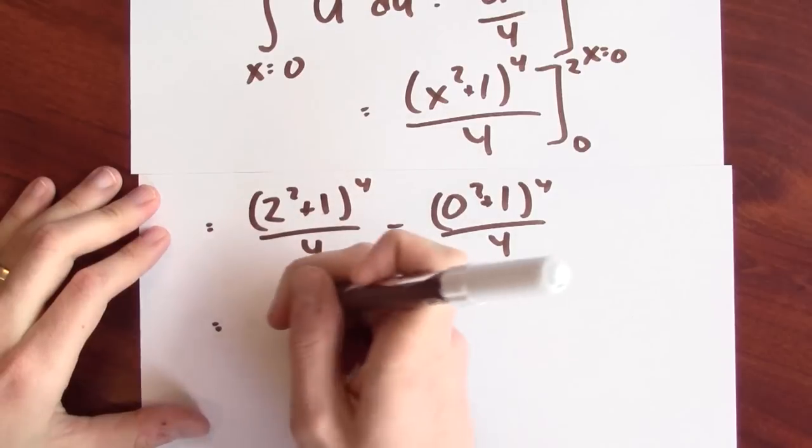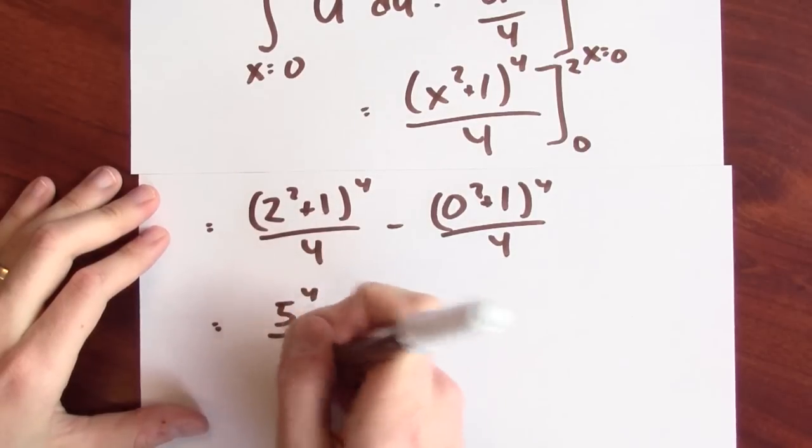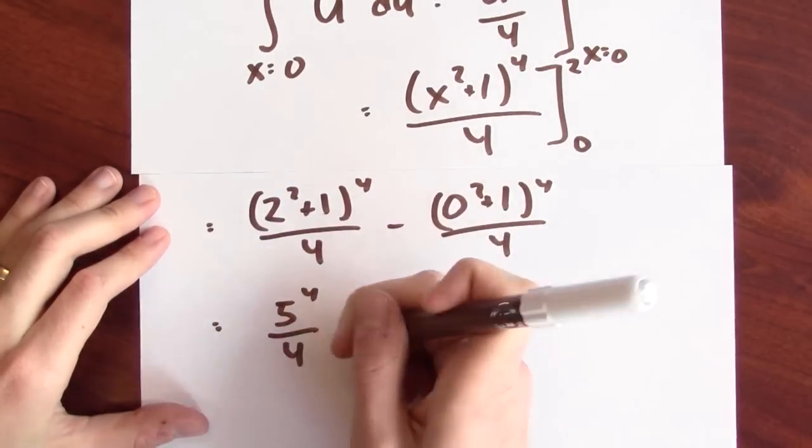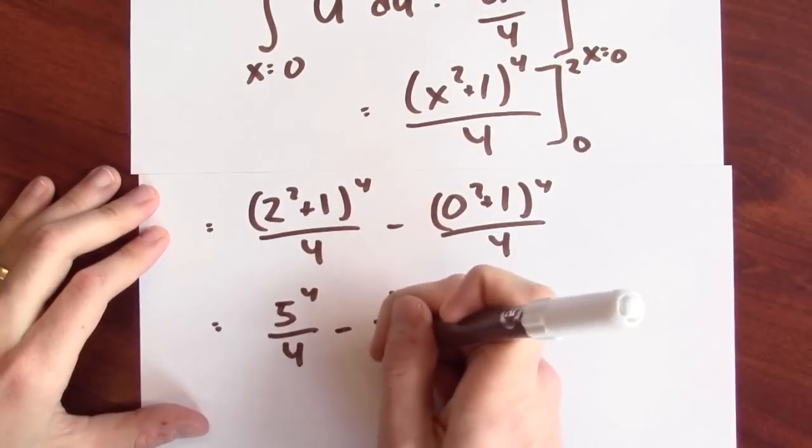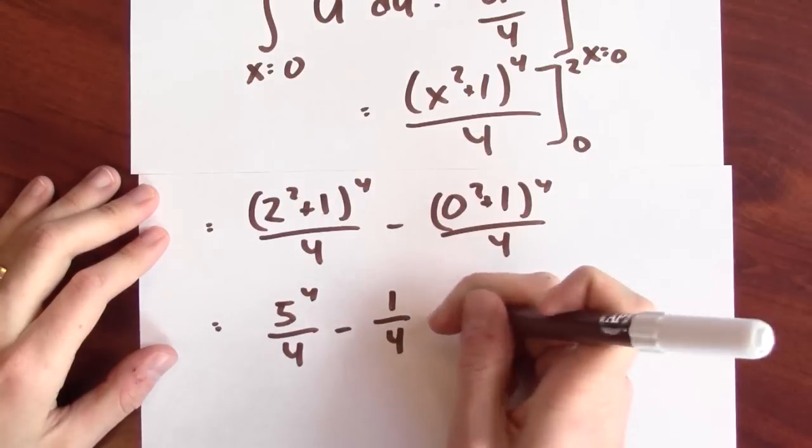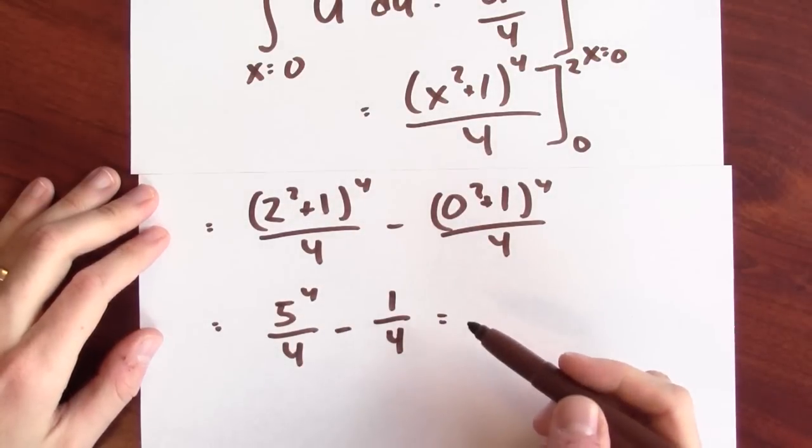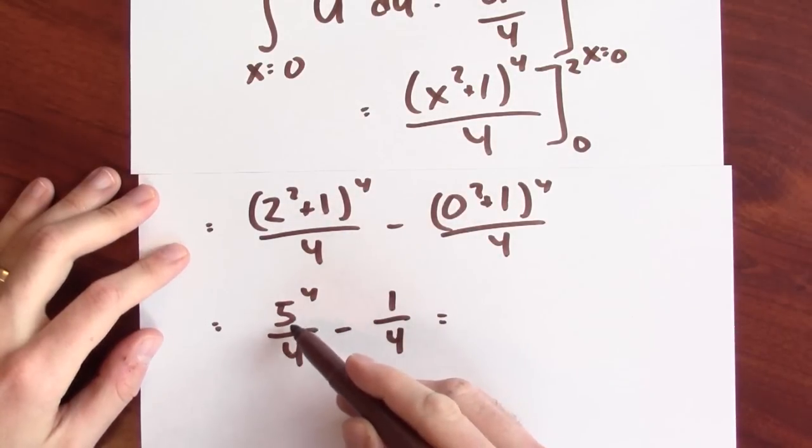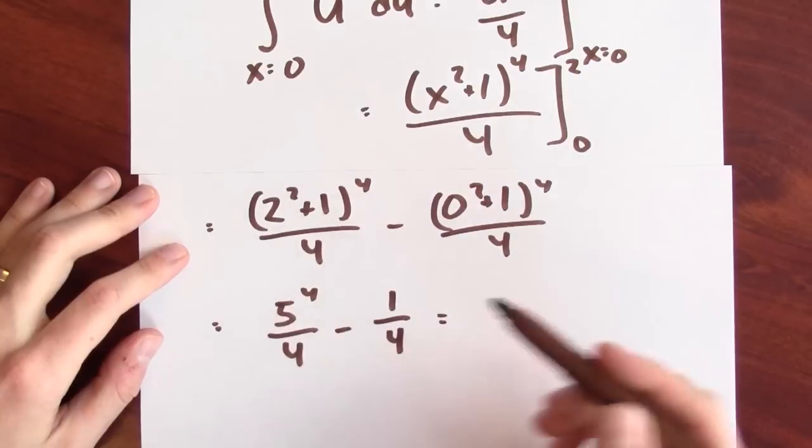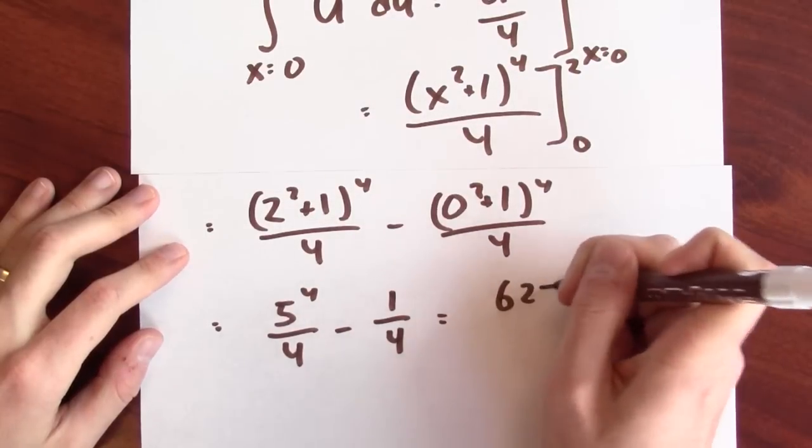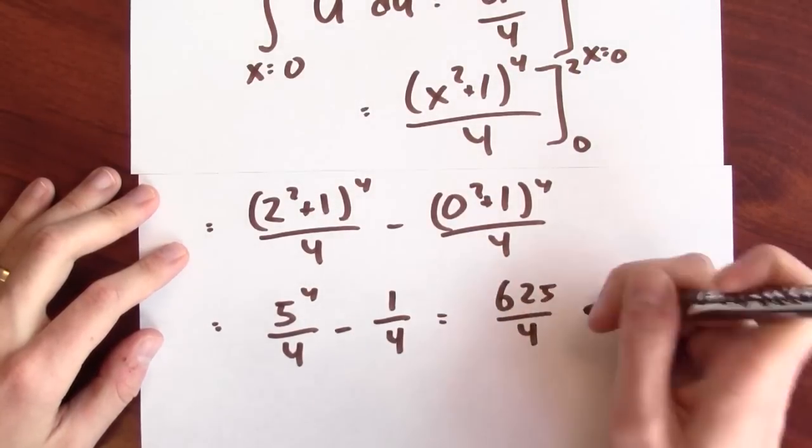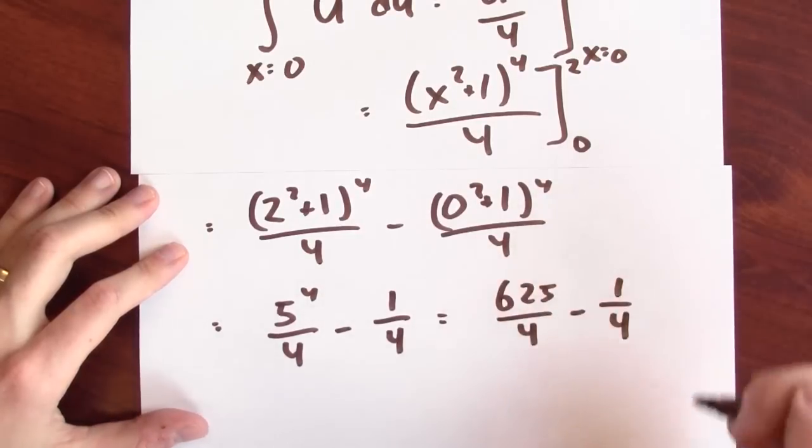Well, what's 2 squared plus 1? That's 5 to the fourth over 4. And that's 1 to the fourth, which is just 1 quarter. And now I got to think about what's 5 to the fourth. Well, that's 25 times 25. That's 625 over 4 minus 1 over 4.